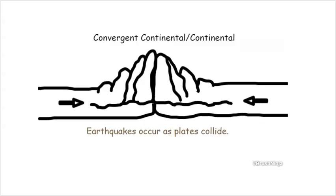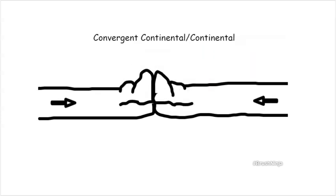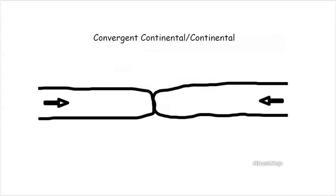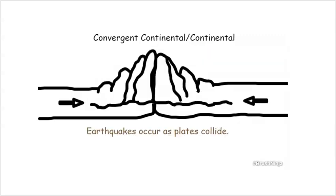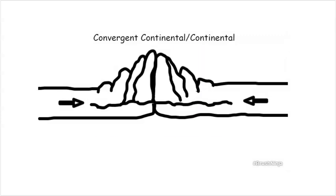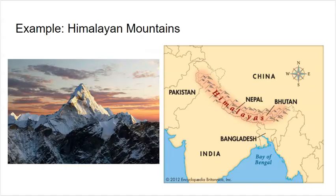Here we have an animation of this exact thing happening. We have the two plates — continents pushing together — and then those mountain ranges forming as they push each other up. Earthquakes also occur as they collide. A common example of this is the Himalayan Mountains in Asia. We have two plates coming together and pushing each other up to form really tall mountains, known as the Himalayan Mountains.